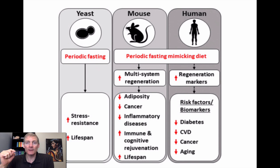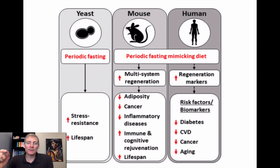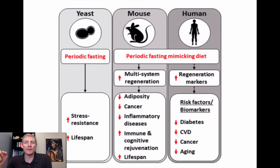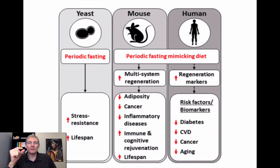This is work from Dr. Longo, an anti-aging researcher known for the fasting mimicking diet. They studied yeast and showed that periodic fasting increases stress resistance and lifespan. Then in mice, periodic fasting mimicking diets showed multi-system regeneration — cardiovascular, nervous system, multiple systems all improved — along with decreased adiposity, meaning they lost fat. You can lose weight and still have visceral fat, as you see with vegans who lose muscle tone and retain a bloated belly even at normal weight.